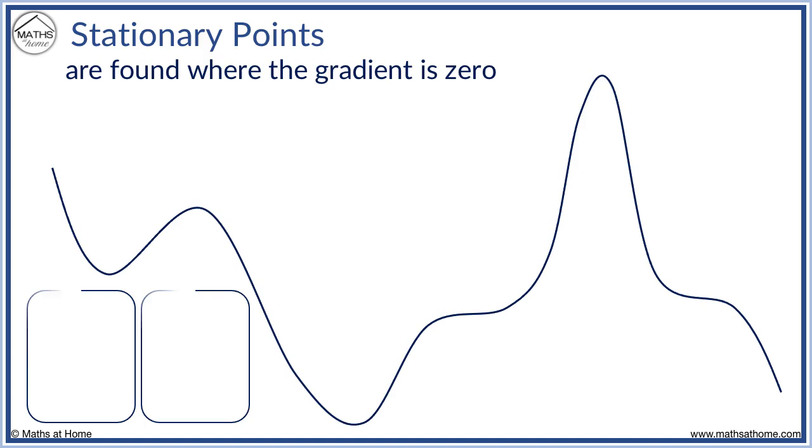The final type of stationary point is a stationary inflection. We have one stationary inflection point here, and another here. Here are all the stationary points on the graph.